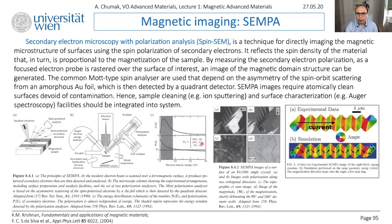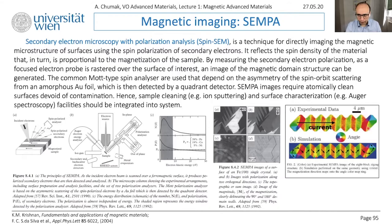Spin-up electrons fly more in one direction and spin-down electrons fly more in another direction. That is how you split the flow of electrons into two parts — spin up and spin down. This gives you information at the end of the day about the magnetic configuration of your sample. Here you see the SEMPA pictures — you can see very complex domain structures, visible very clearly. The scale is 20 microns here and 4 microns there, but principally you can go to the nanometer range.